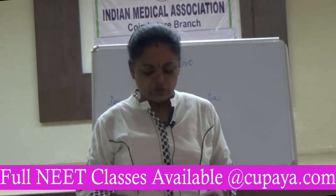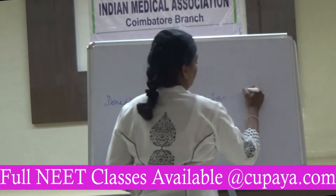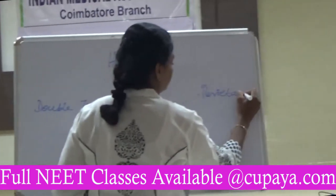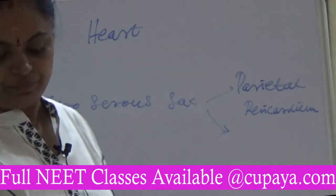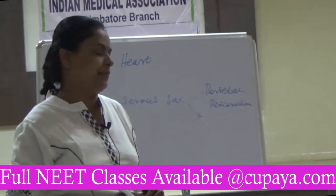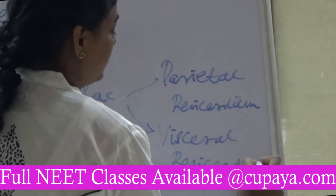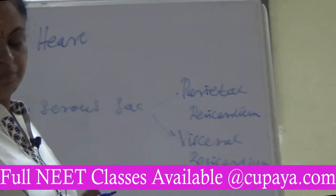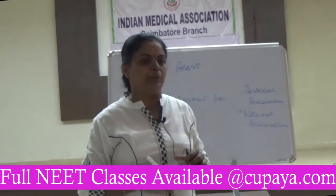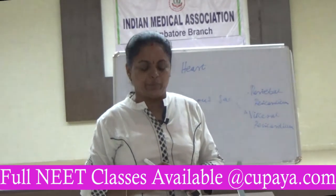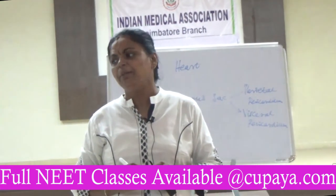The pericardium consists of an outer parietal pericardium and an inner visceral pericardium. In between these two pericardial layers is the pericardial cavity, which is filled with pericardial fluid.